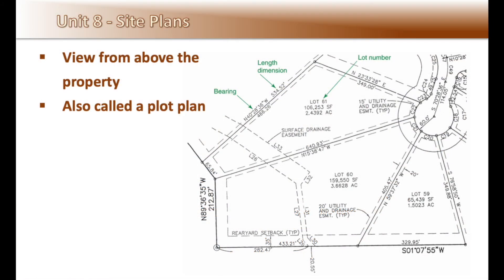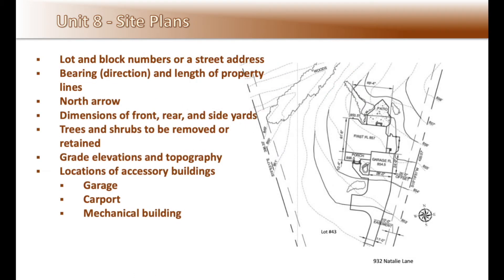Site plans are viewed like floor plans from above looking down. Site plans can include lot and block numbers or street addresses, bearings which is direction and length of property lines, a north arrow, dimensions of front, rear and side yards, trees and shrubs to be removed or retained, grade elevations and topography, location of accessory buildings such as garage, carports, or mechanical buildings.